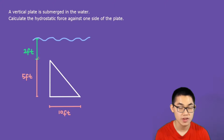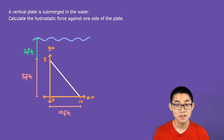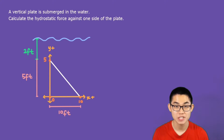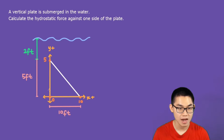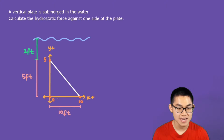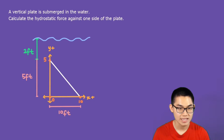The plate is submerged 2 feet into the water. The first thing I'm going to do is put the x and y-axis onto this triangle. I put the x-axis on the base of the triangle with the positive direction to the right. For the y-axis, I put it on the side with the positive direction upwards. Because the width is 10 feet, the center is at zero, this point is 10, and since the height is 5, this point is 5.